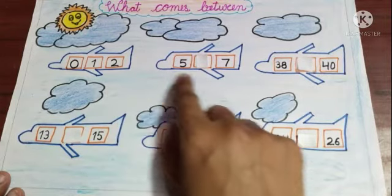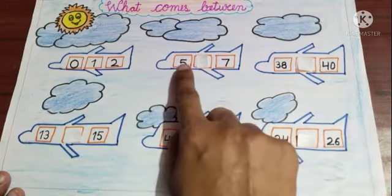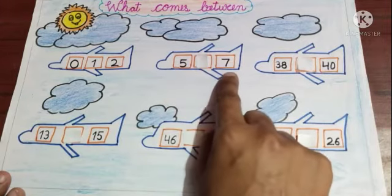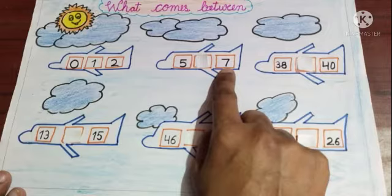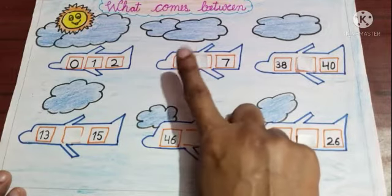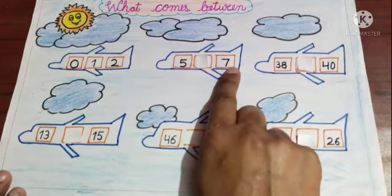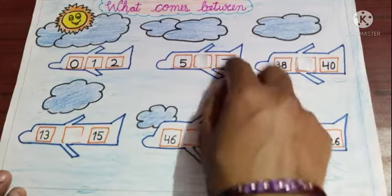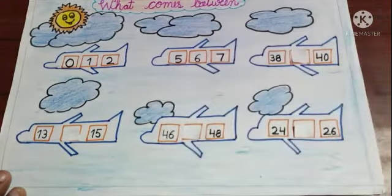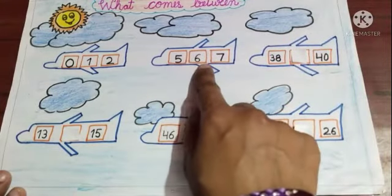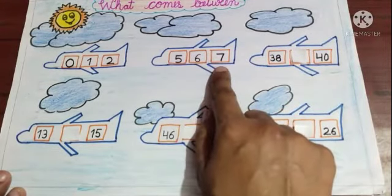And the next number is five and seven. So please tell me what comes just in between five and seven? Yes, number six. Five, six, seven.